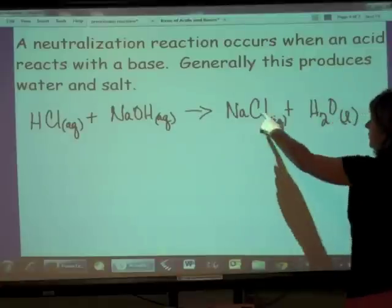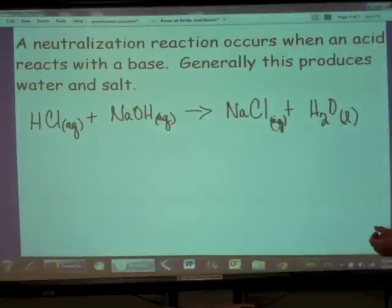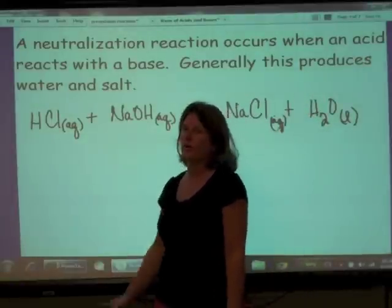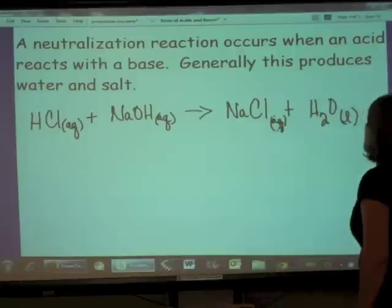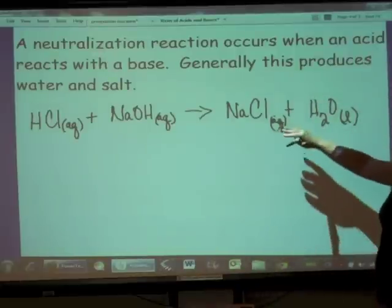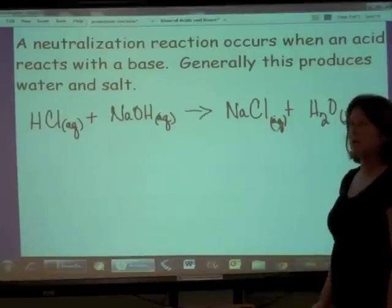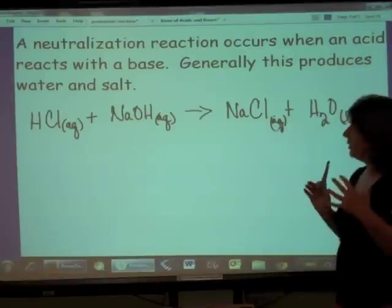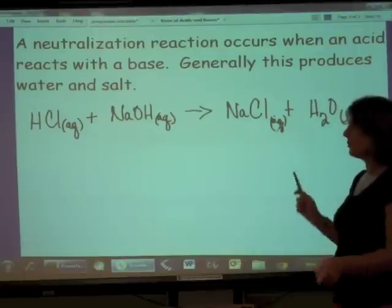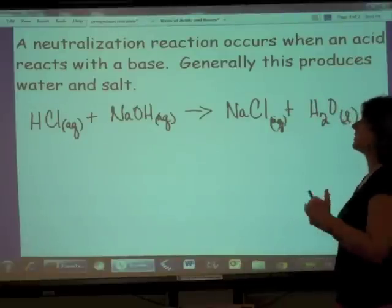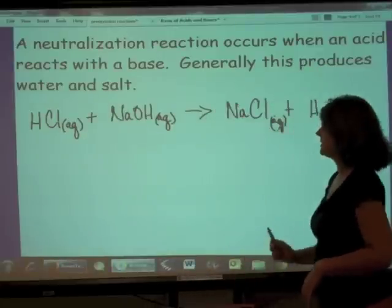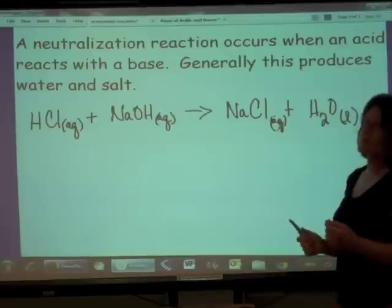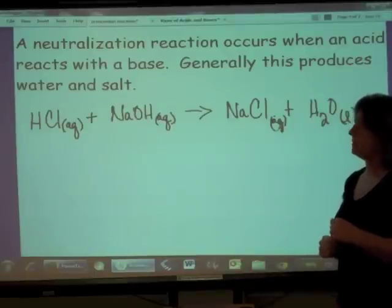Now the salt that forms can be numerous ionic compounds depending upon the cation of the base and the anion of the acid. So tomorrow in class what we're going to do is we're going to go through this thing to write a complete ionic and a net ionic for this neutralization reaction. Always neutralizations, double replacement. Double replacement. Acid plus base gives us water and salt. That's one type of reaction of acids and bases.